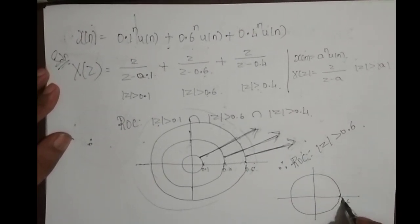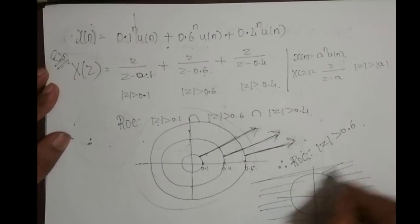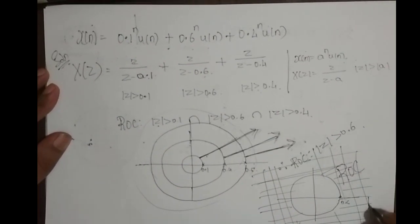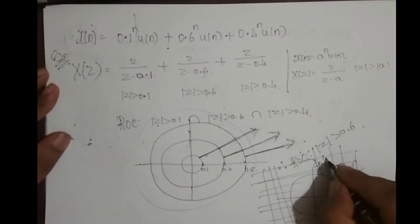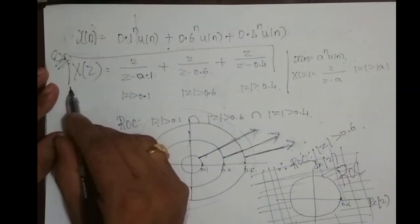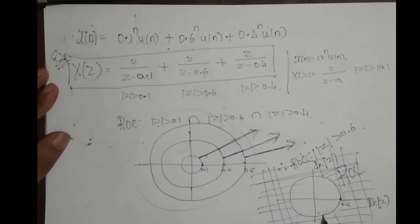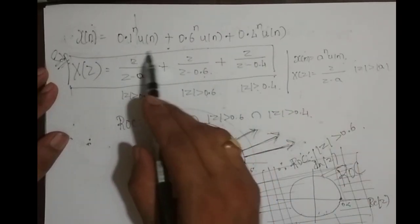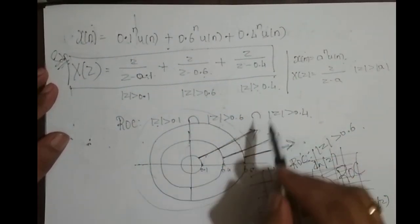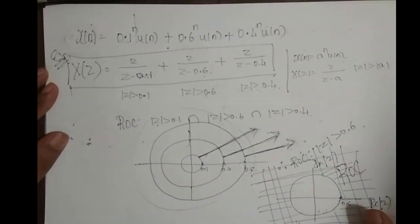The ROC of the given sequence is the shaded region outside the circle of radius 0.6 in the Z-plane (real part vs imaginary part). This is the Z-transform of this sequence and this is its ROC. Basically, if we have more than one right-sided sequence, the ROC is always outside the outermost circle.